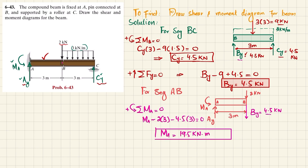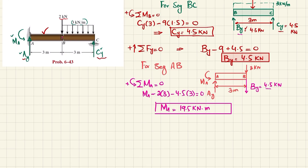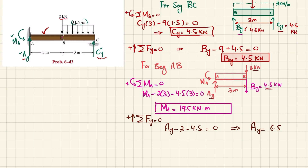A_Y can be found using the sum of forces in the Y direction equals zero, taking upward as positive. So A_Y − 2 − 4.5 = 0, therefore A_Y = 6.5 kN.